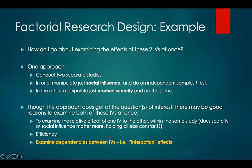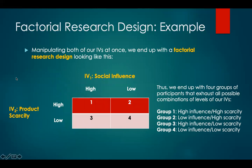Manipulating both independent variables at once, we end up with a factorial research design. We end up with four groups of participants that exhaust all possible combinations of the levels of our independent variables. Group one is high social influence and high scarcity. Group two is low social influence and high scarcity. Group three is high social influence and low scarcity. And group four is low social influence and low scarcity.